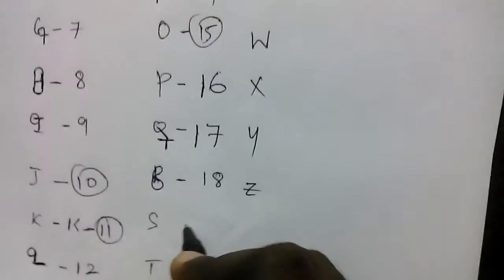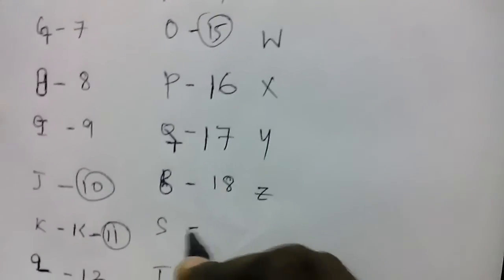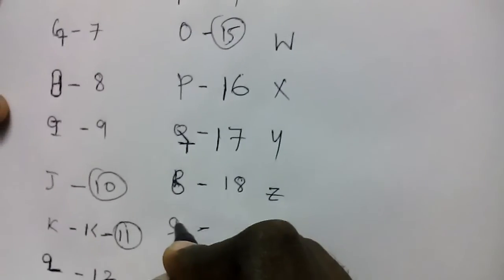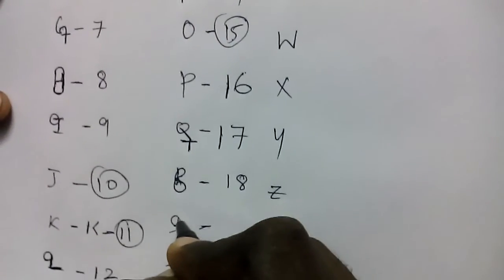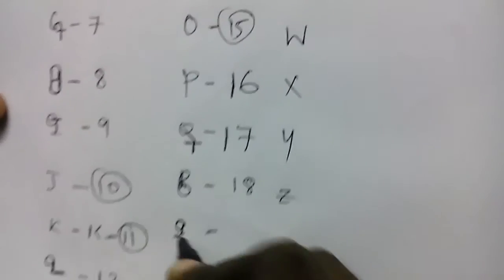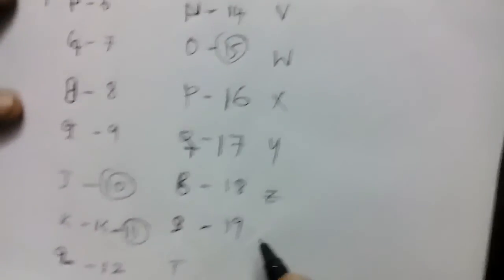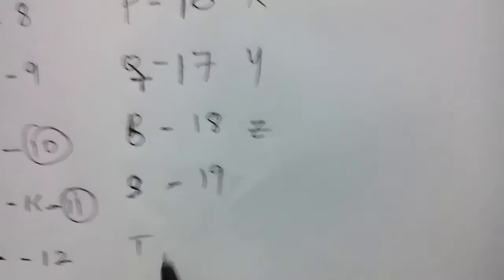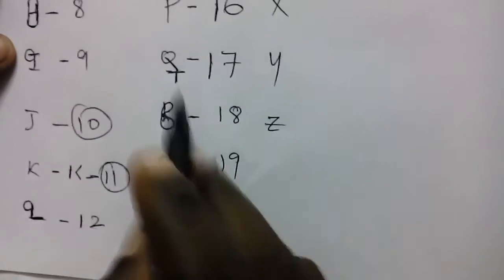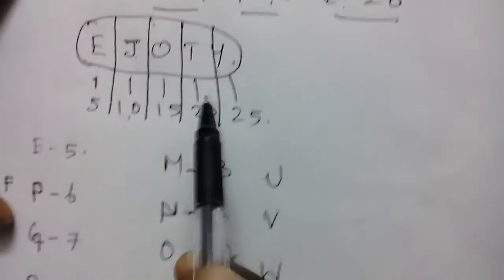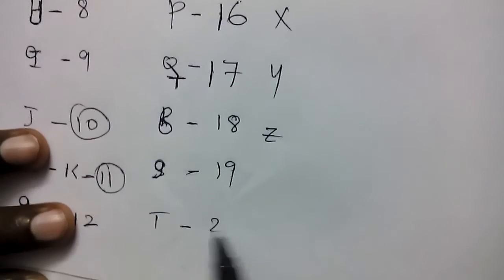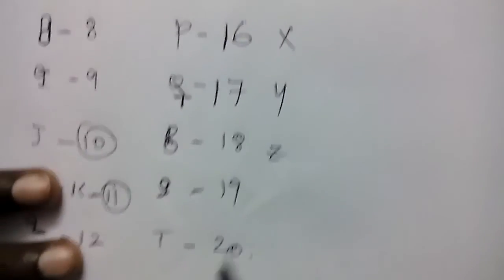For S: close the circle of S so it looks like a 9 — S is 19. T is already in the E J O T Y formula — T is 20.